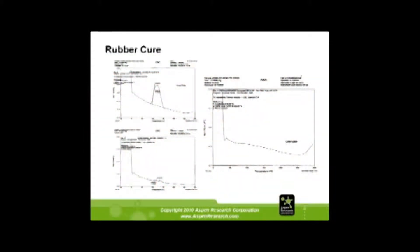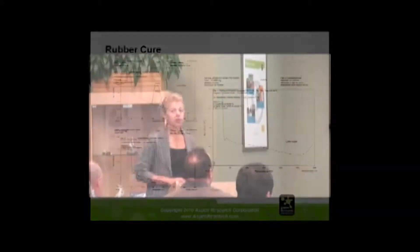Here are some rubber cure results. This is an exotherm — a silicone rubber curing. The customer asked us to run it uncured, then they were supposed to have cured the material and we ran it again. As you can see, there was still some uncured material in the sample — the curing exotherm is visible here. So they cured it once more, and now you have a flat line, meaning everything is fully cured.